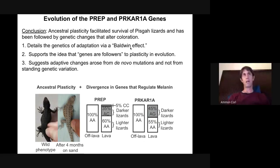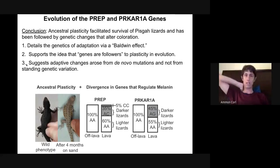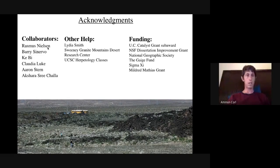To summarize: there was ancestral plasticity in the phenotype that probably facilitated survival of lizards in this novel environment, followed by genetic change in two genes — PREP and PRKAR1A — that alter color. Alternative alleles in the Pisgah population produce darker lizards, providing a detailed genetic example of the Baldwin effect. This supports the idea that genes can be followers to plasticity. The results also suggest these adaptive changes arose from de novo mutations rather than standing genetic variation. I'd like to thank my supervisor Rasmus Nielsen at Berkeley, collaborators at UC Santa Cruz, Claudia Luke, and Aaron Stern.